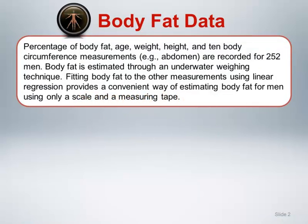We will use the body fat data as our case illustration. Percentage of body fat, age, weight, height, and 10 body circumference measurements are recorded for 252 men. Body fat is estimated through an underwater weighing technique. Fitting body fat to these simple measurements using linear regression provides a convenient way of estimating body fat for men using only a scale and a measuring tape. We will focus on using a single body measurement: abdomen circumference. It would also be reasonable here to examine the relationship between these body measurements using the linear correlation techniques we discussed earlier in this module.